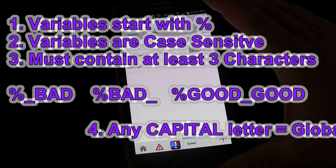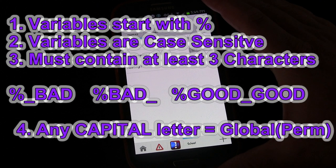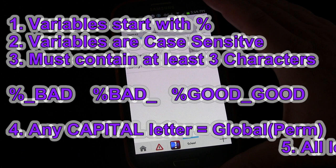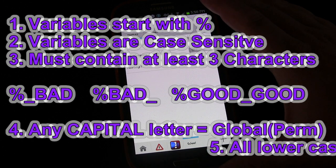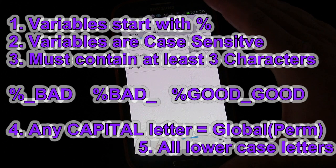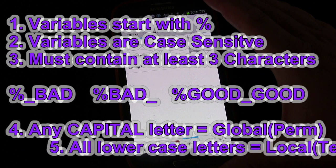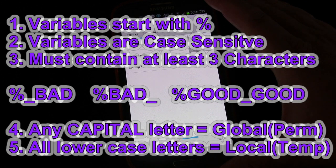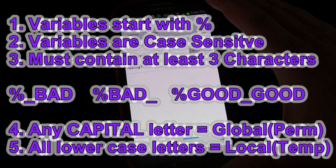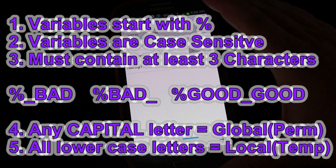If you use all lowercase letters, that makes the variable local, meaning it only holds its information until the current task or scene it's being used in is ended. For example, if you have a task that generates a random number and does something based on that random number, once that task is done you don't need to hold that value. The next time you run the task it'll generate a new random number, so lowercase is appropriate there.